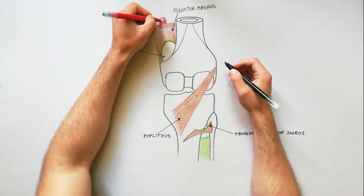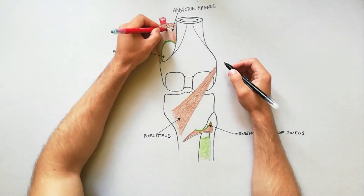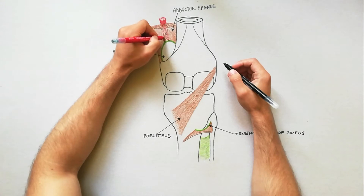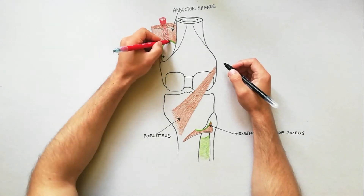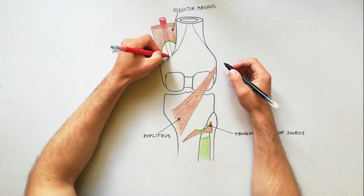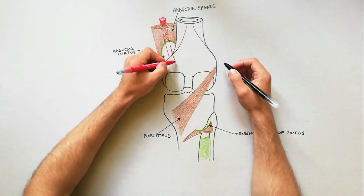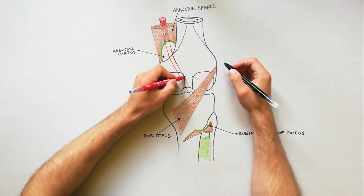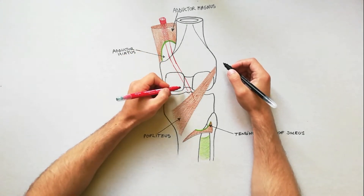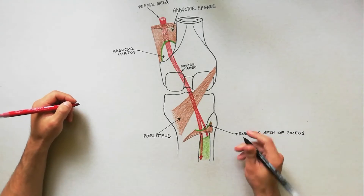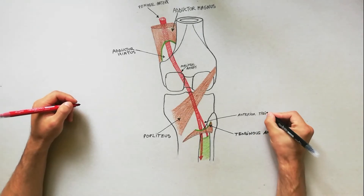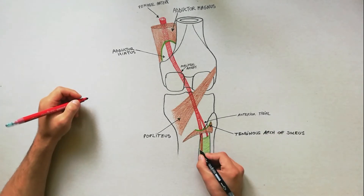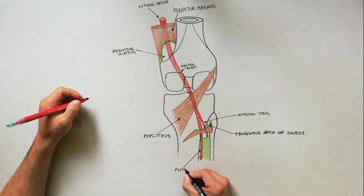The popliteal artery is the continuation of the femoral artery. It begins at the adductor hiatus, crosses the floor of the popliteal fossa from the medial to lateral side to reach the lower border of the popliteus, where it terminates by dividing into anterior and posterior tibial arteries.